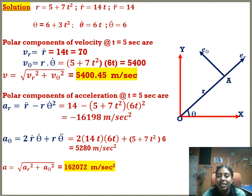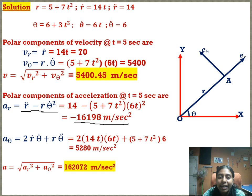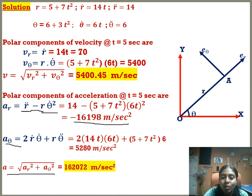For acceleration in polar coordinates, the radial component is ar = r̈ − r·θ̇², which gives −16198 m/s². The transverse component is aθ = 2ṙ·θ̇ + r·θ̈. The total acceleration is a = √(ar² + aθ²) = 162072 m/s². That is all for today — hope you all understood. If you have doubts, you can ask. Thank you for listening.